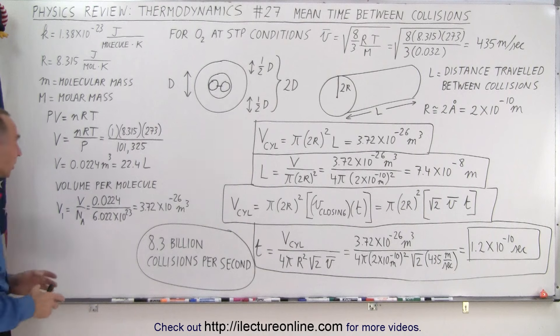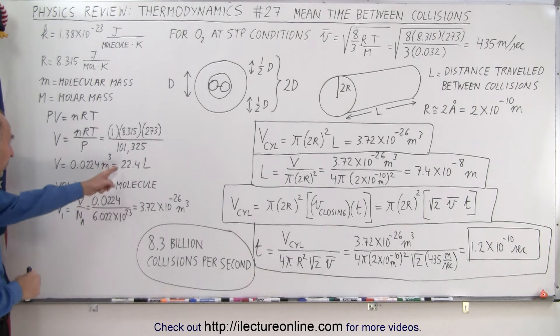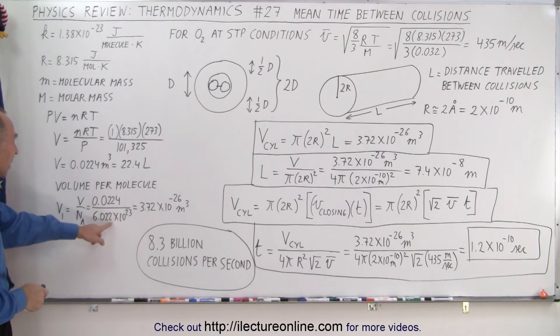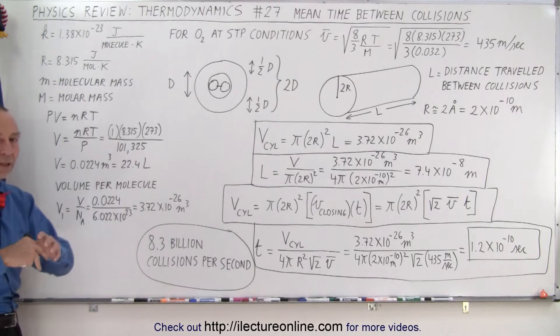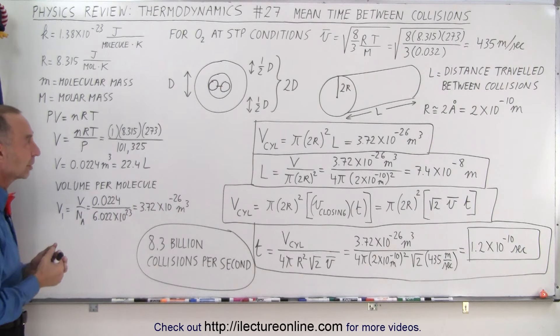And that then allows us to calculate the volume for a single molecule. And so we divide that number in cubic meters divided by Avogadro's number, and that gives us this volume for a single molecule.